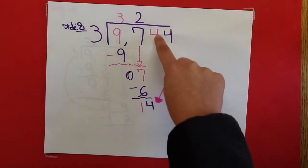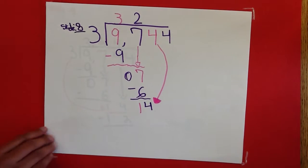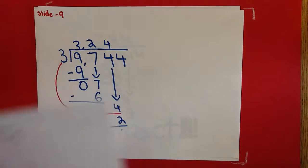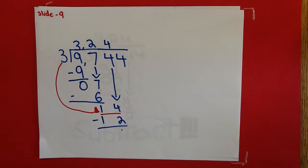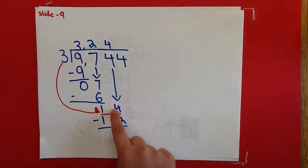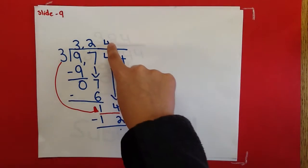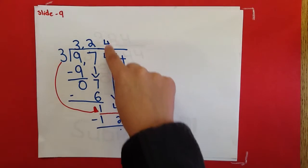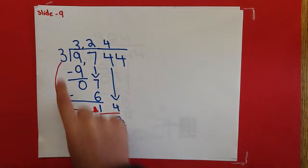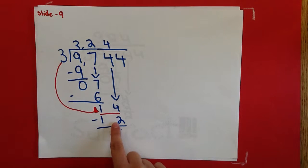Now bring down the 4 and put it next to the 1. Now figure out how many times 3 can go into 14. 3 goes into 14 four times. Write the 4 above the 4. Multiply the 4 times 3. The answer is 12. Put the 12 under the 14.